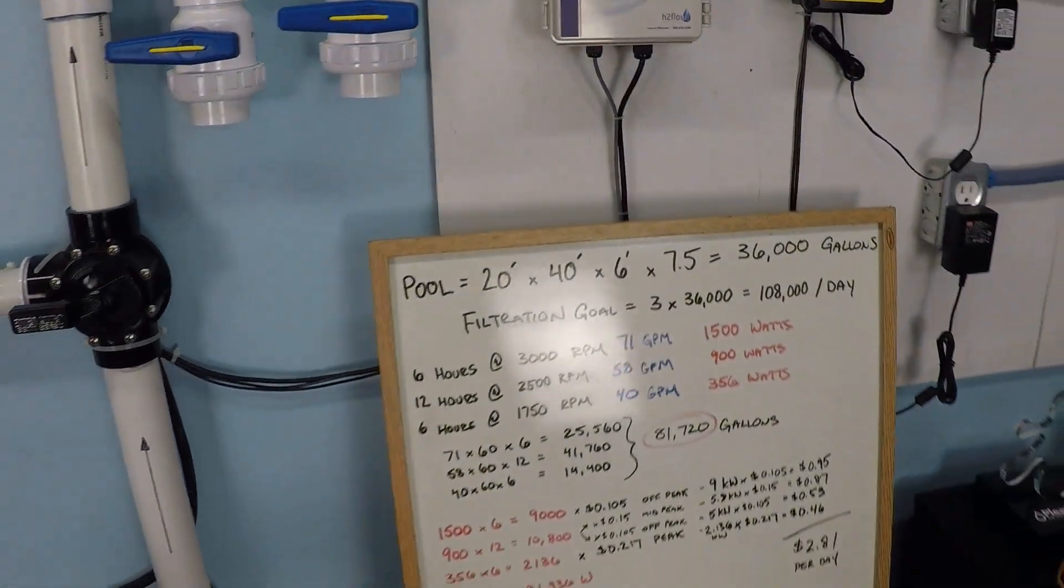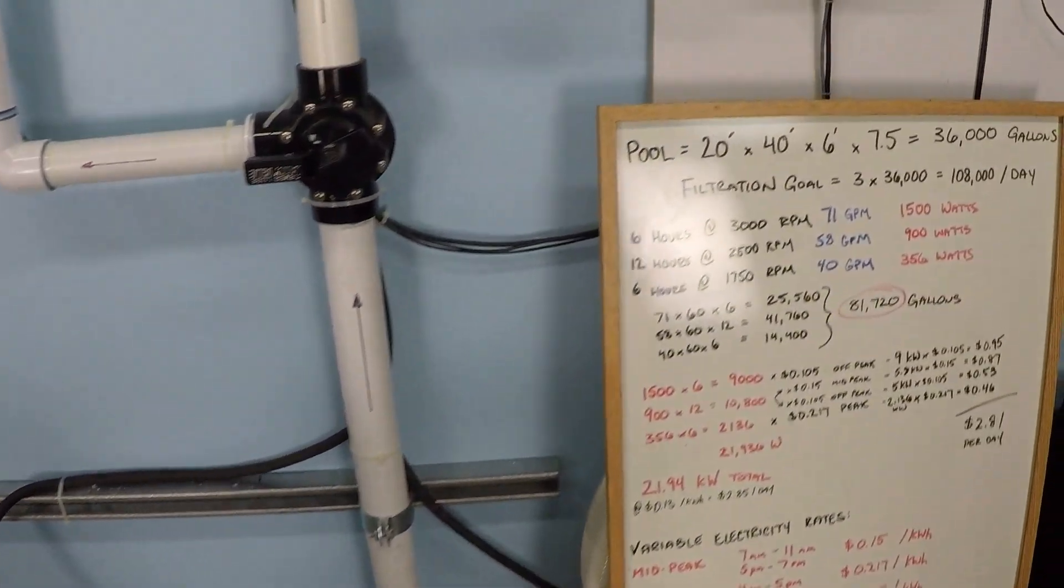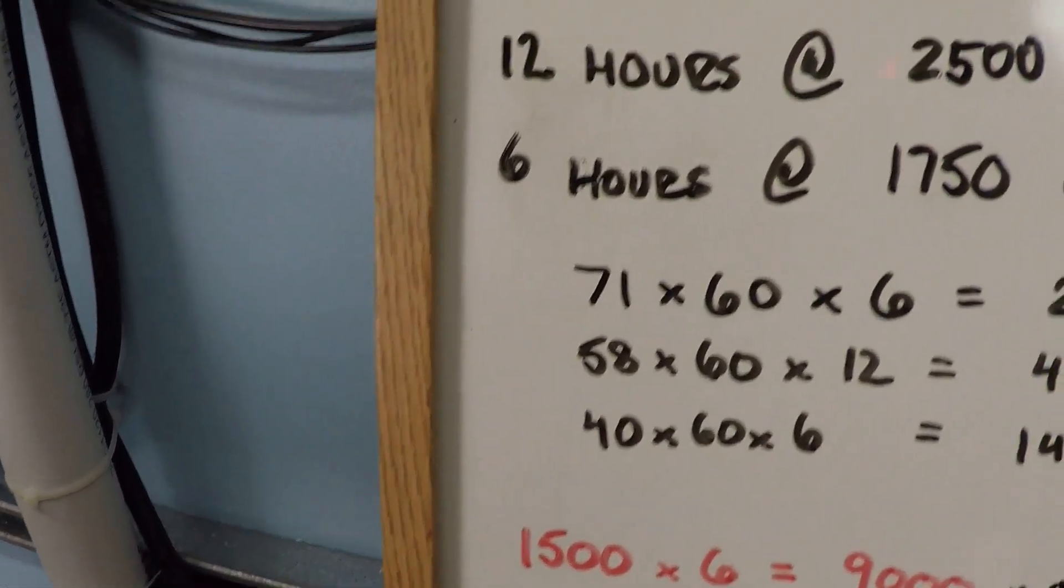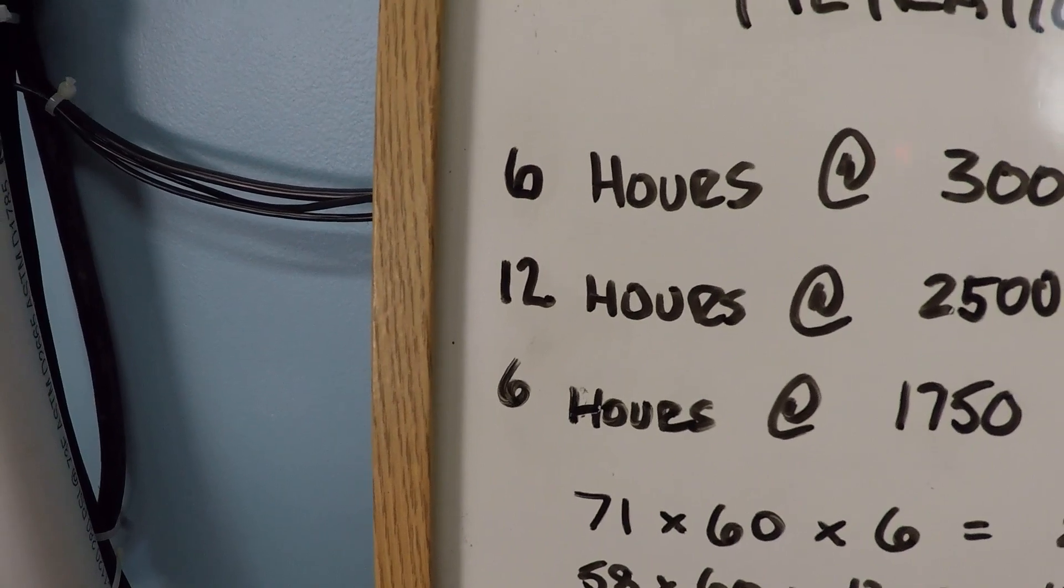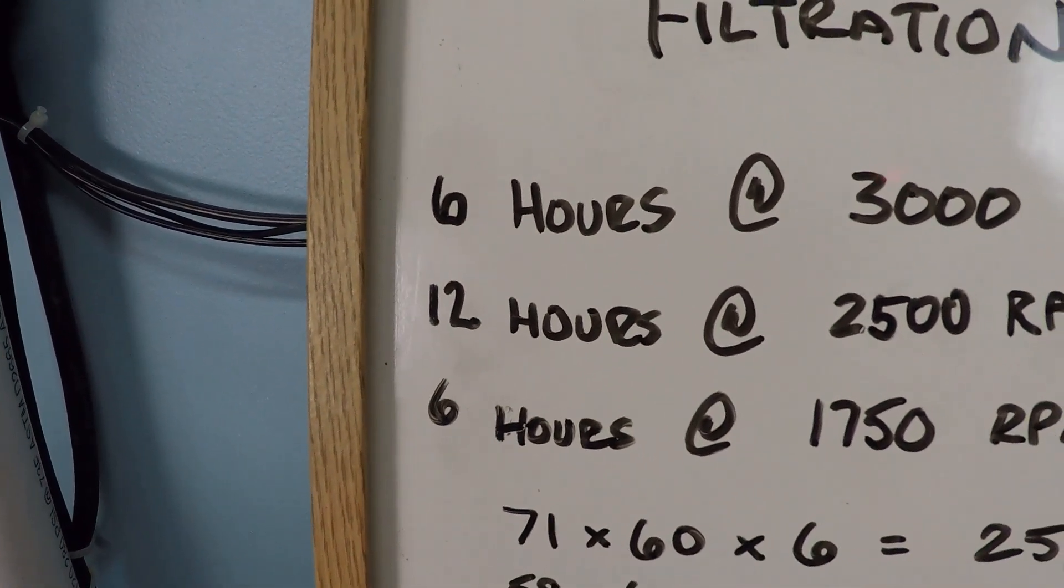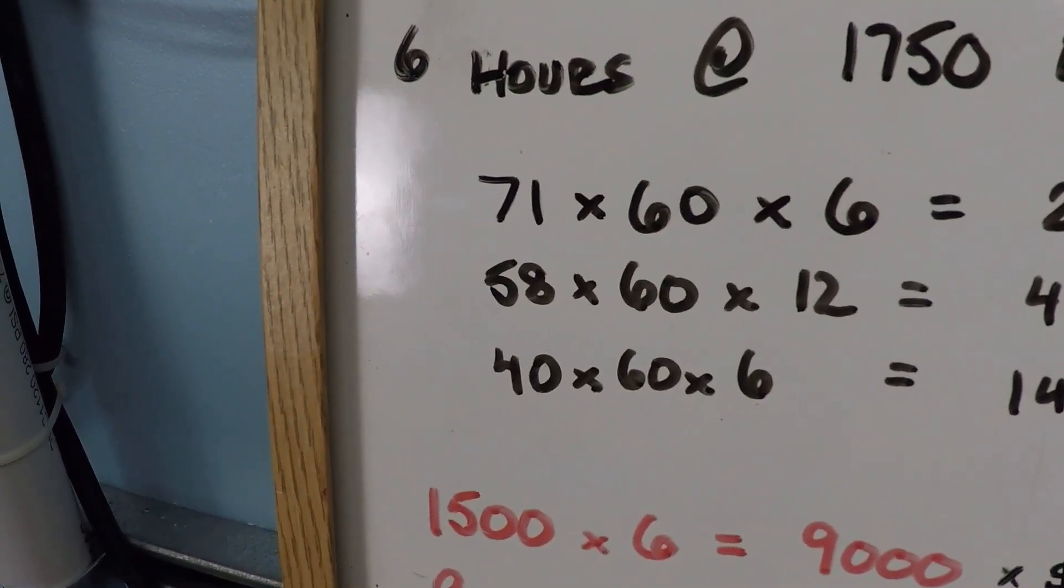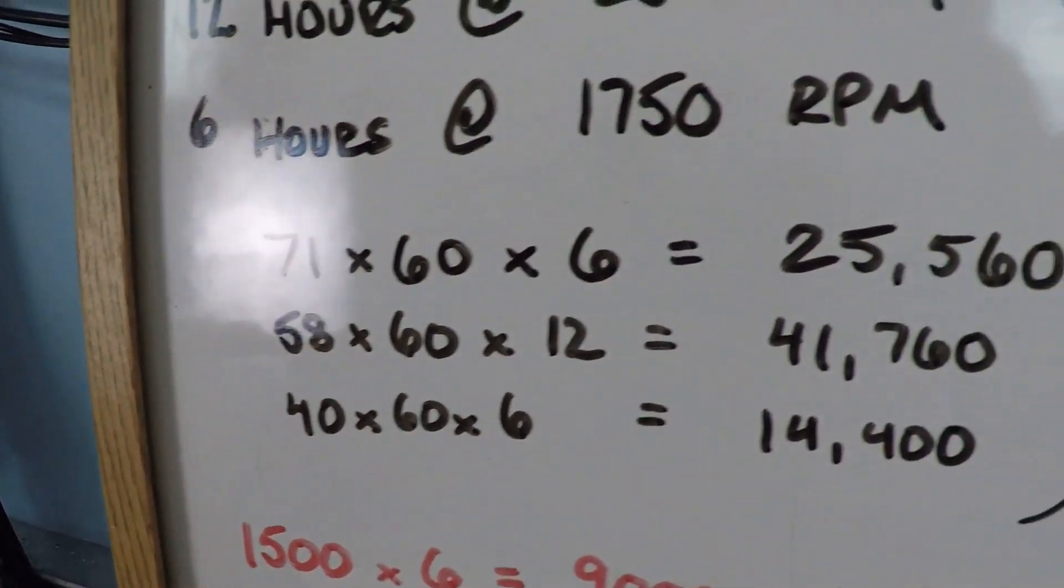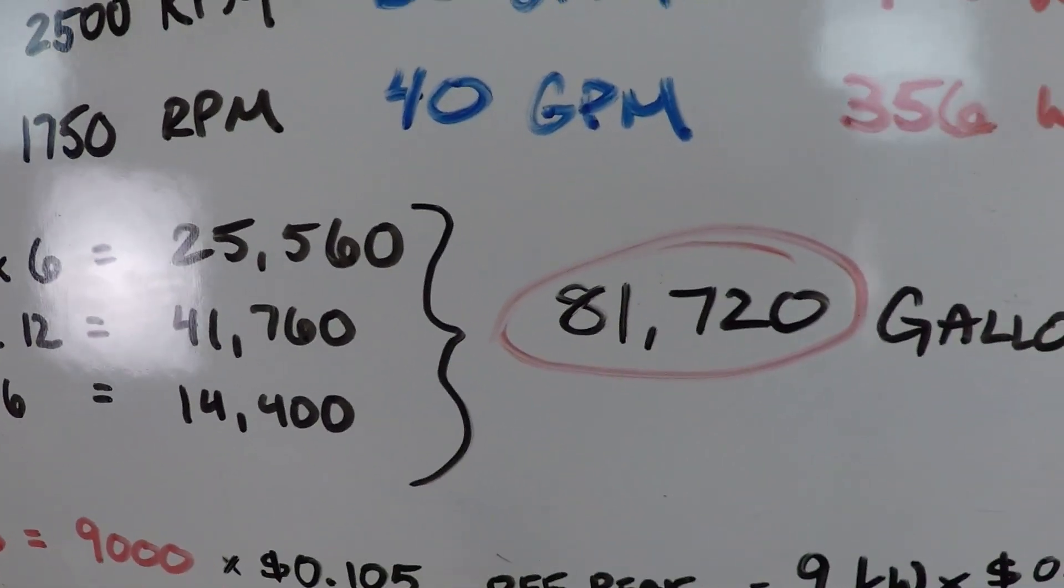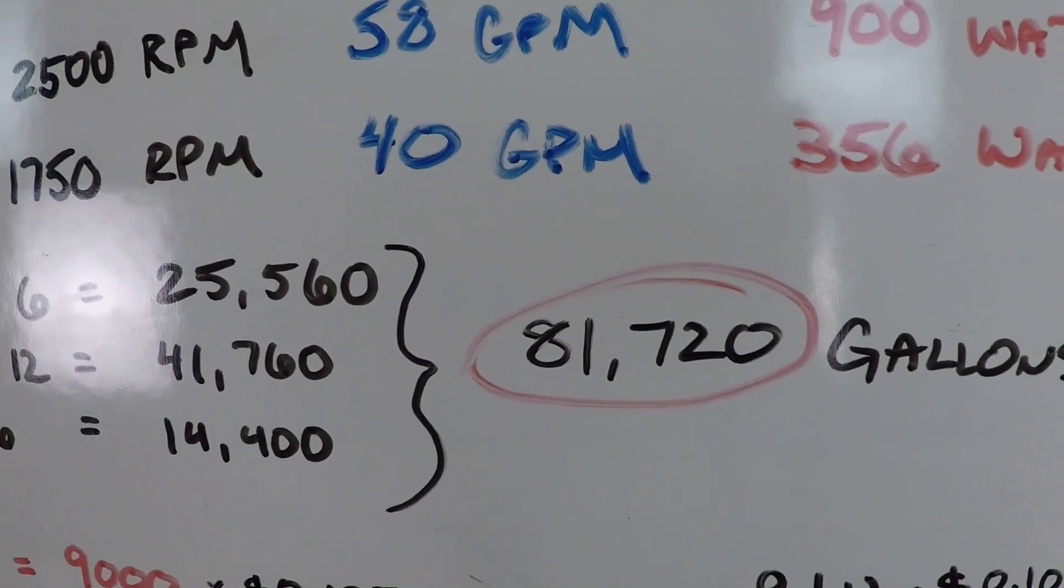So let's go ahead and crunch these numbers a little bit now that we know that these are real world figures that we're talking about. So that schedule that I provided here, as we already know, we can't achieve 108,000 per day with this system, it's not possible. So that program that I just laid out resulted in 81,720 gallons of water in total.